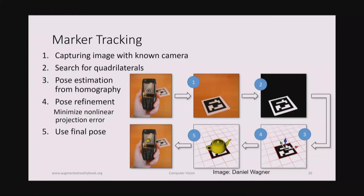The pose estimation requires numerical refinement to minimize the nonlinear projection error — minimizing the pixel error in image space. This gives the pose, which is then used for rendering augmentations. Multiple markers are discriminated by embedding a barcode-type pattern inside the square — similar to data matrix or QR codes — using a redundant bit encoding. This allows several thousands of unique markers. Other variants include spherical targets using different ball configurations, and pulsing LEDs in ceilings.